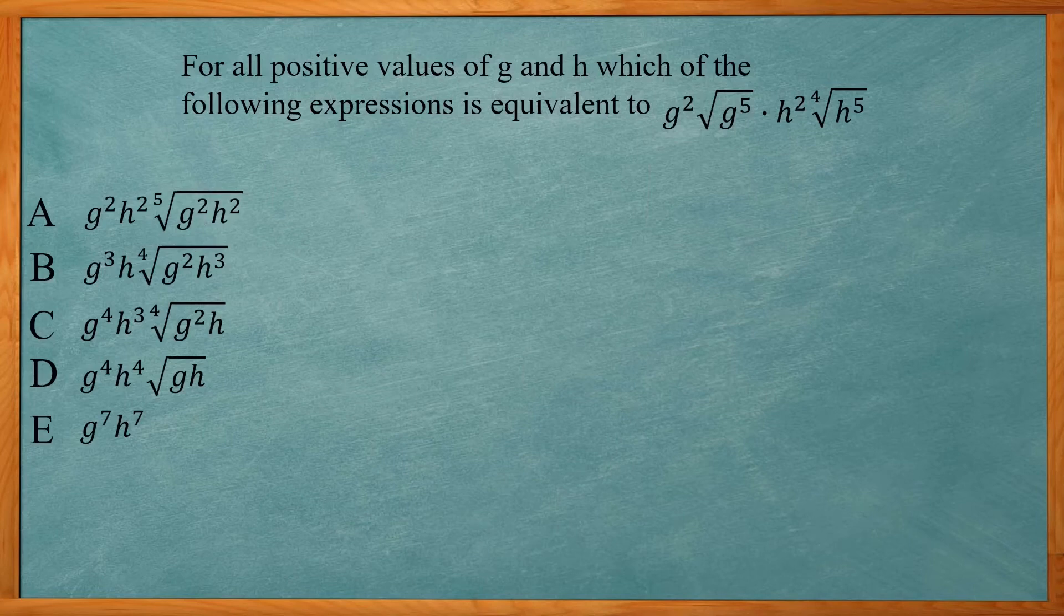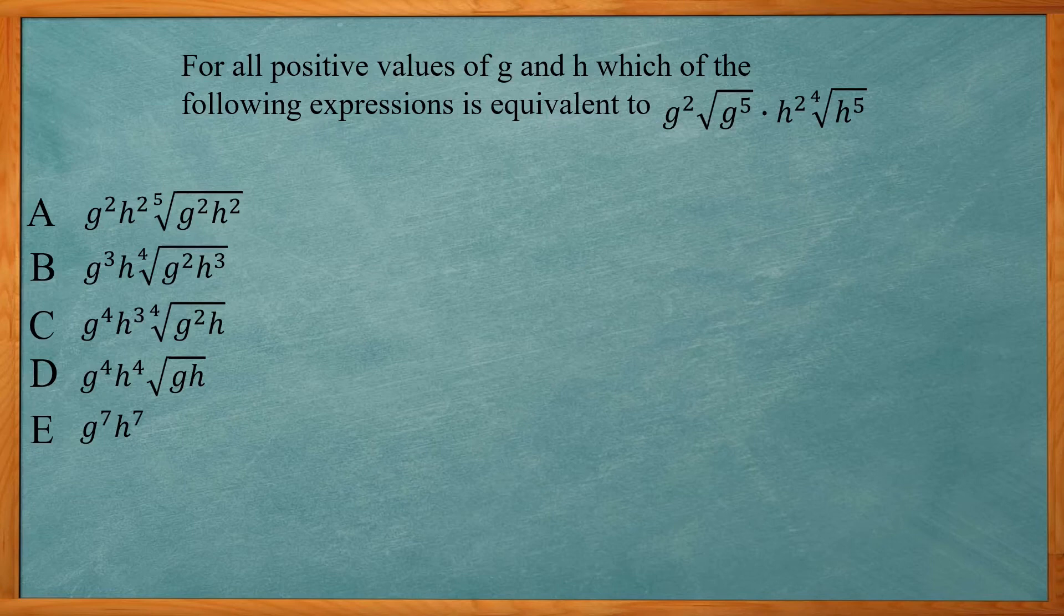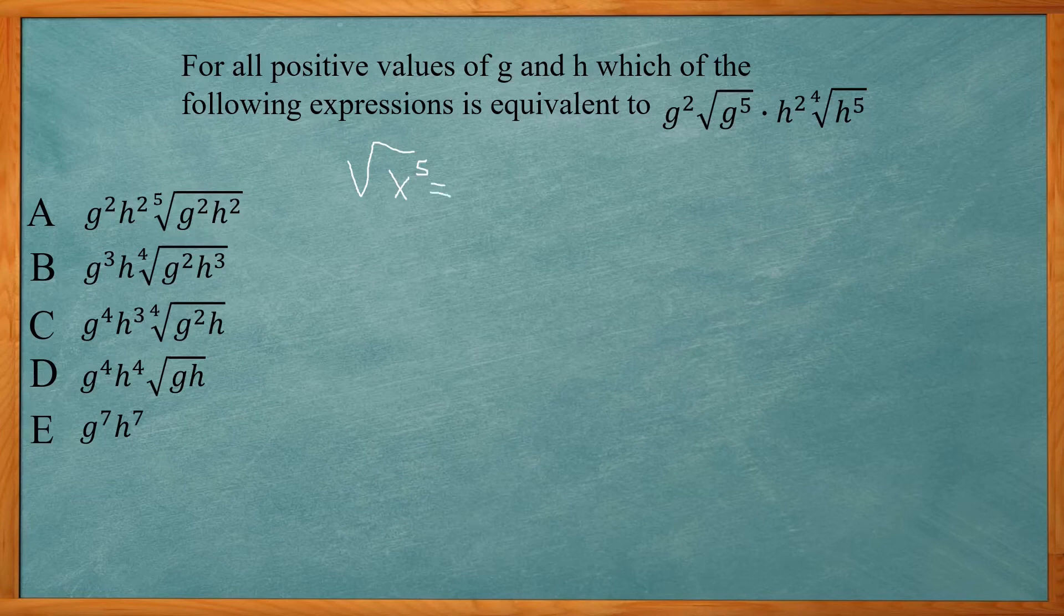Alright, so if you see this problem says for all positive values of g and h, which of the following expressions is equivalent to g squared, square root of g to the fifth, times h squared, fourth root of h to the fifth power. So we said before, the square root of x to the fifth is equivalent to x squared times the square root of x.